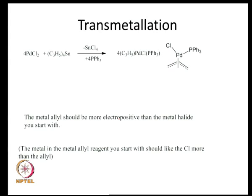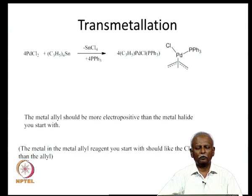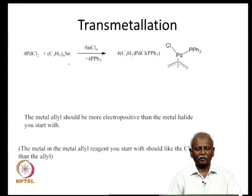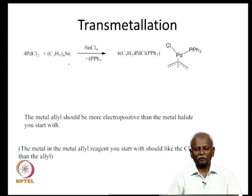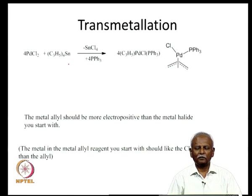Instead of a simple substitution reaction, we can also do a transmetallation reaction. In the transmetallation reaction, we have an allyl tin group — a main group allyl complex where the allyl group is sigma bonded to the tin. This allyl group is not heavily polarized as allyl minus and tin plus. It can react with palladium chloride to transfer one allyl group to the palladium. When reacted with 4 molecules of triphenylphosphine, you end up with a palladium coordinated to an allyl group, a triphenylphosphine moiety, and a chloride.